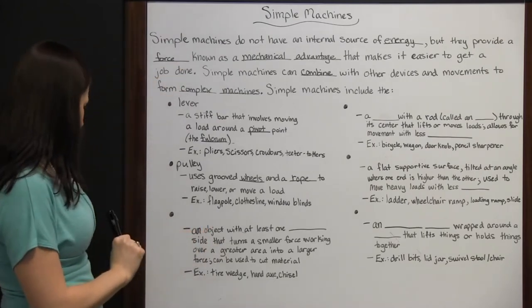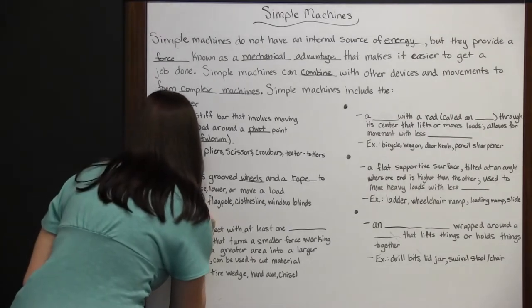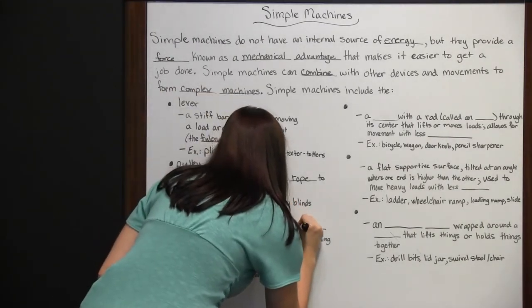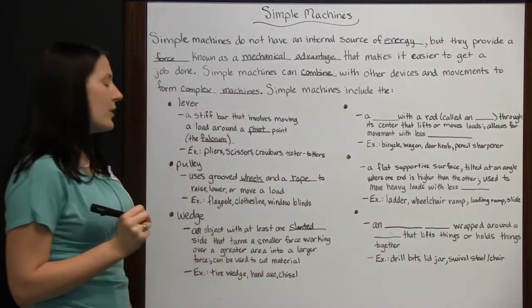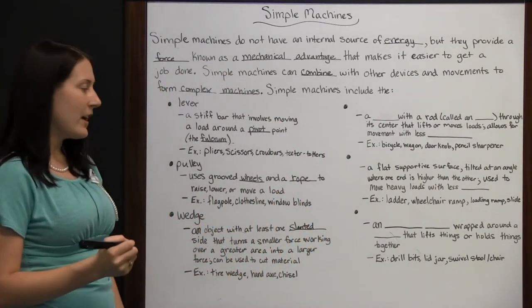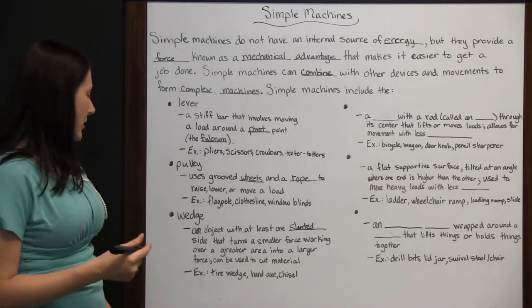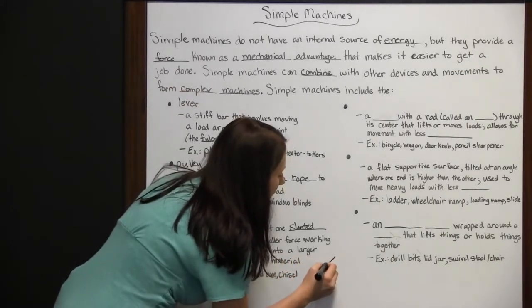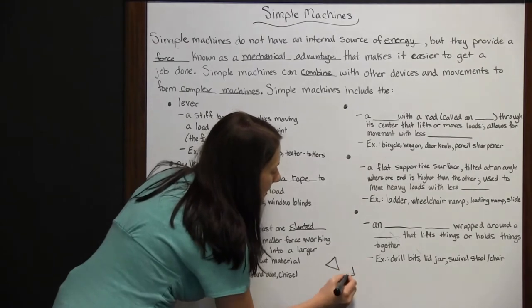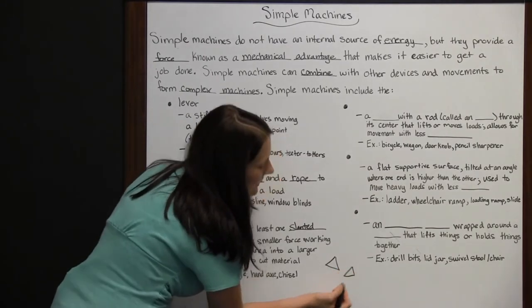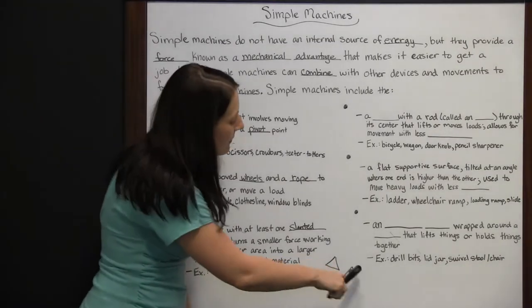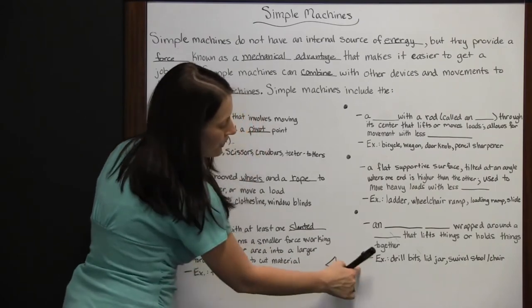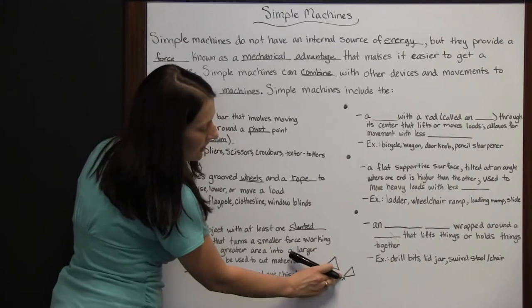Next, we have the wedge. The wedge is an object with at least one slanted side that turns a smaller force working over a greater area into a larger force. It can also be used to cut material. Now, what that means is that whatever you have that's wedge-shaped is going to be maybe like a triangle, or if it sits flat on the ground, it at least has this one slanted side. If you put force on this end, you're going to be putting all this force you're expending over this whole part onto just this one small area.